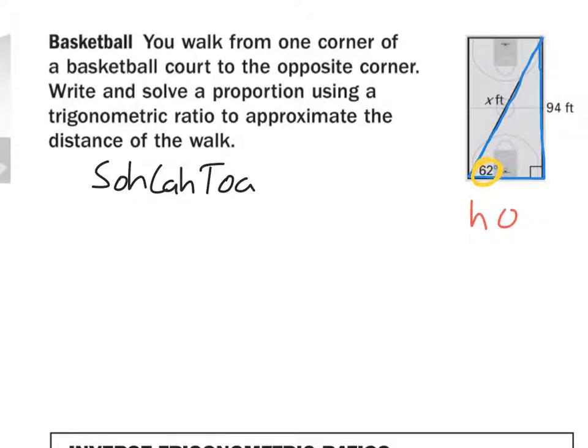Which of these ratios, sine, cosine, or tangent, uses the hypotenuse and the opposite side? Sine, right? Sine uses opposite and hypotenuse. So therefore, I want to write sine 62 degrees, because remember, sine does not go by itself. It has to have an angle with it. So sine of 62 degrees equals opposite over hypotenuse. So that's going to be 94 over X.